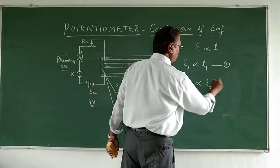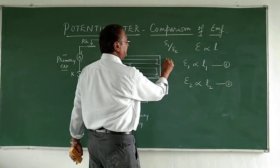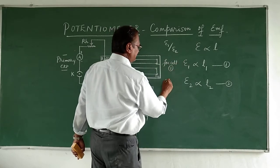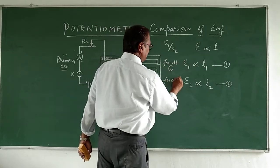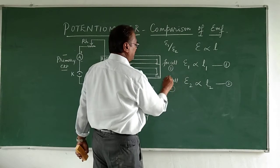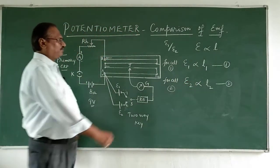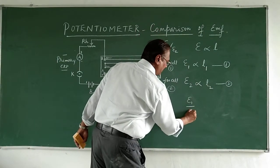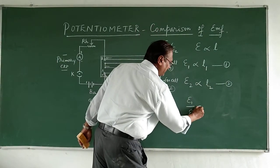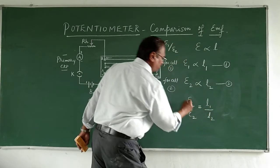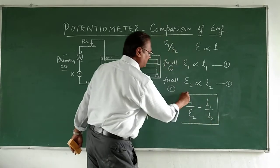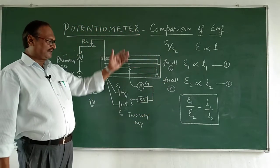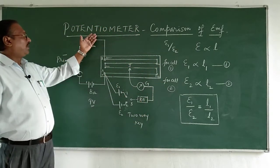At that time you find out the balancing length, and for the second cell epsilon 2, which is proportional to L2, equation 2. This is for cell 1 and this is for cell 2. For these two cells we have done the comparison. We got the values L1 and L2. So epsilon 1 upon epsilon 2 is equal to L1 upon L2.